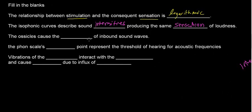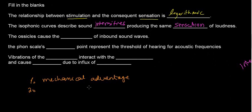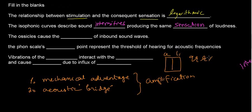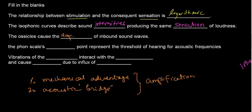The ossicles cause the amplification of inbound sound waves, and they have two roles: mechanical advantage and acting as an acoustic bridge. These two cause the amplification of sound because the outside environment of the outer ear is air, and the inside of the inner ear is aqueous. When air crosses an acoustic boundary into liquid, it loses roughly 99.9% of its energy — we don't want that to happen, so we use the ossicles.